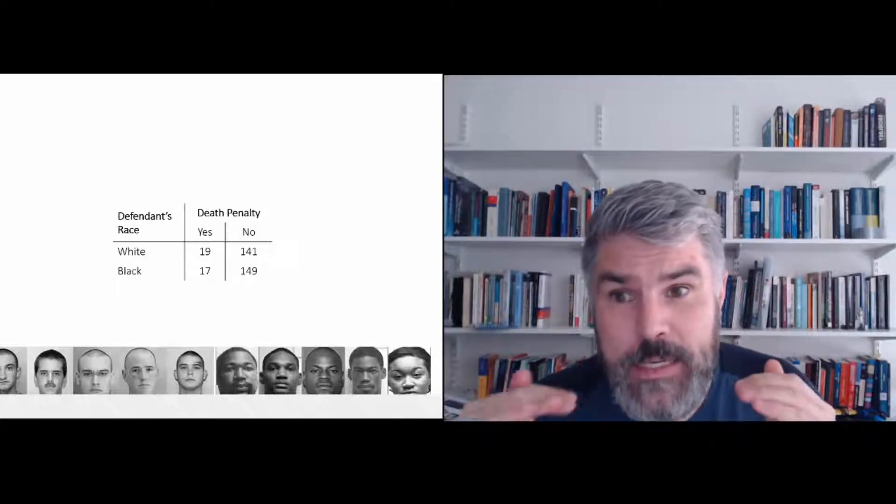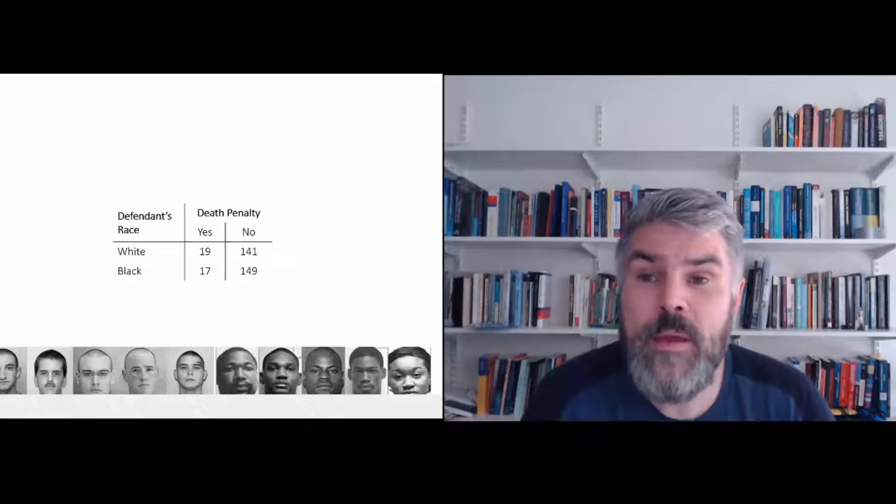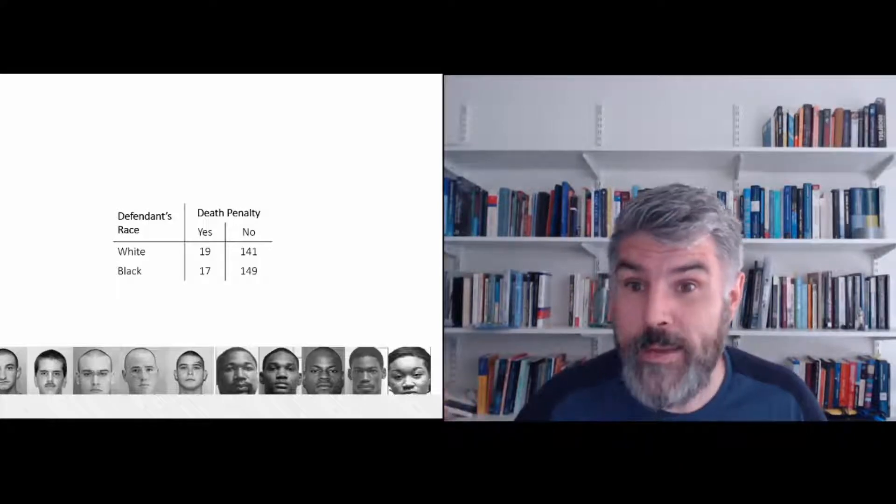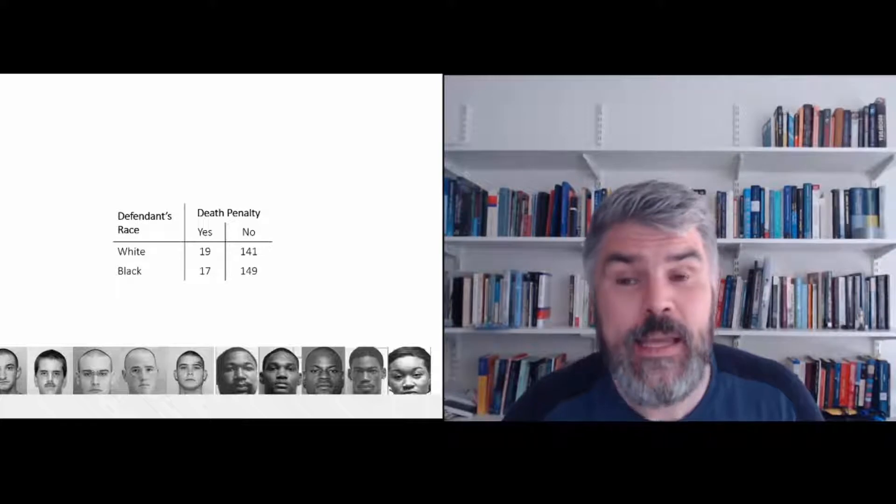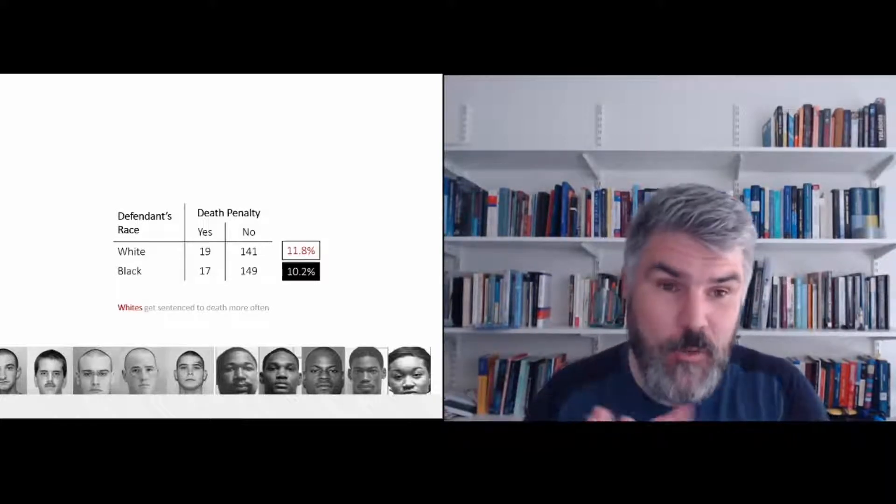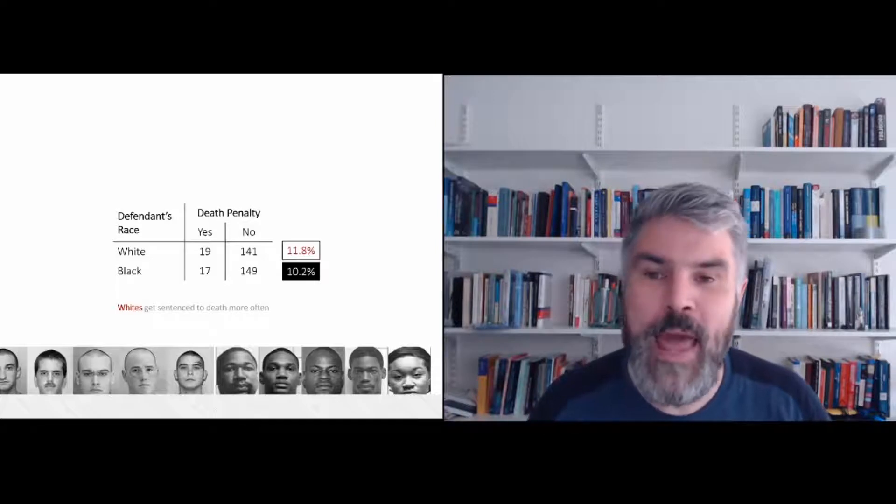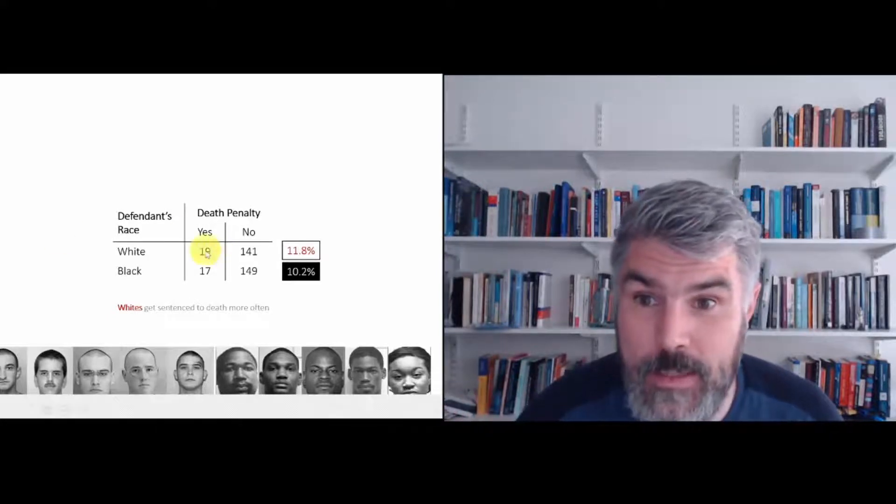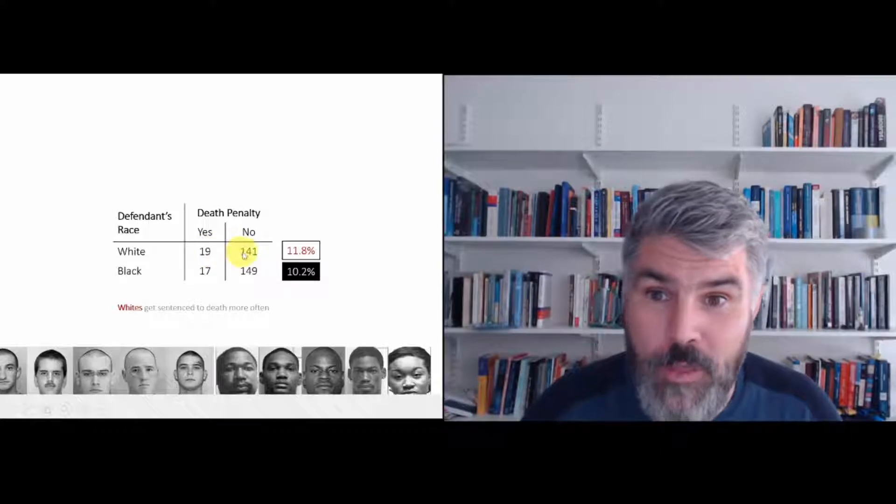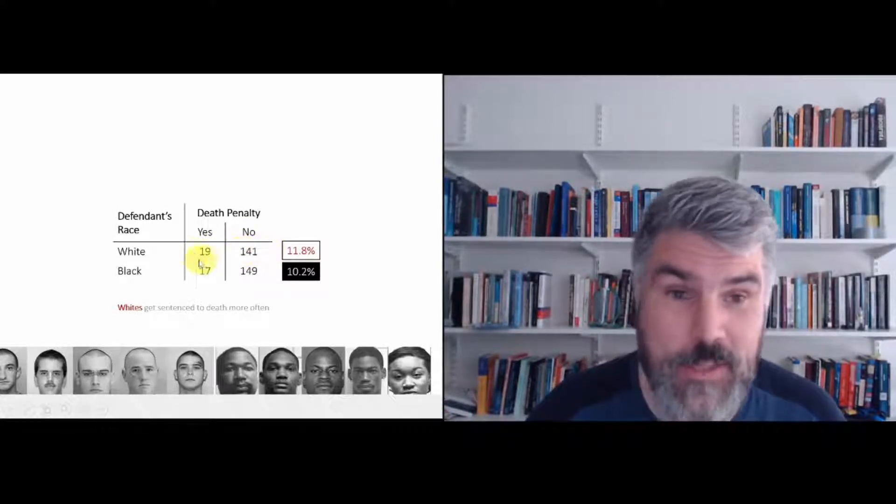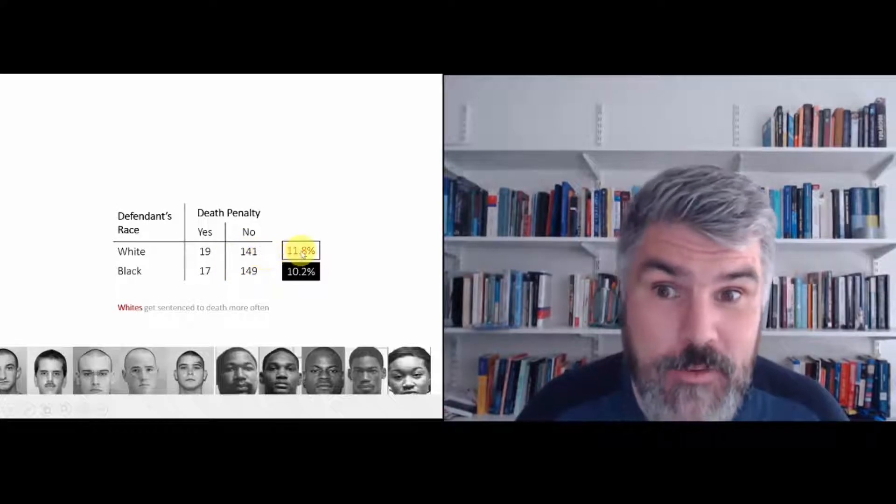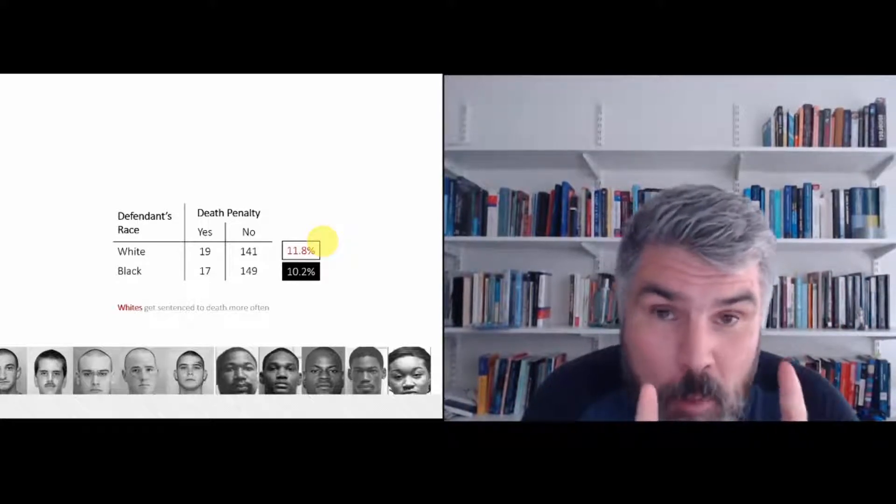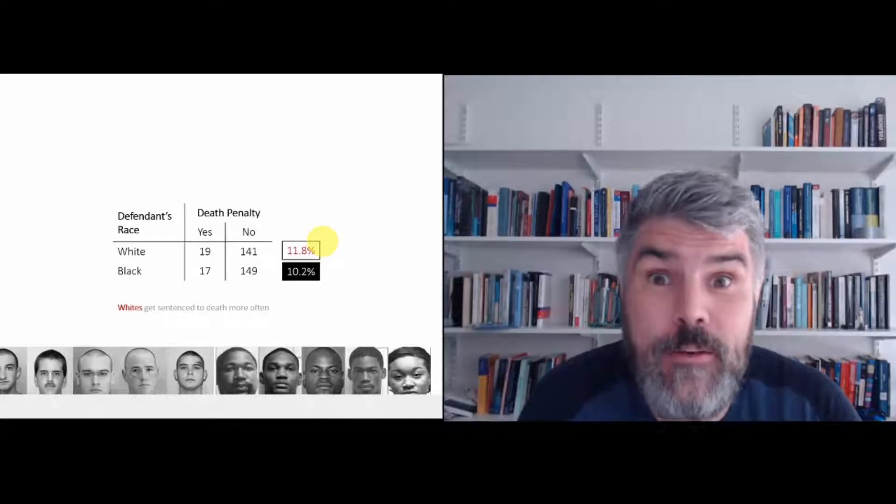And what Radelet did is separate that information out for whether the offender or the defendant, the murderer, was white or black. And did the murderer receive the death penalty? Yes or no? When we look at the number of whites that did get the death penalty, that's 19 divided by 141 plus 19. So 19 divided by 160, that gives you 11.8%. So 11.8% of the white murderers were sent to death, received the death penalty.